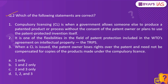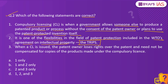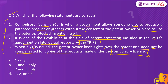The second question: Which of the following statements are correct? Statement 1: Compulsory licensing is when a government allows someone else to produce a patented product or process without the consent of the patent owner, or plans to use the patent-protected invention itself. Statement 2: It is one of the flexibilities in the field of patent protection included in the WTO's TRIPS agreement. Statement 3: Where a compulsory license is issued, the patent owner loses rights over the patent and need not be compensated. The third statement is incorrect, so option B is the right answer.